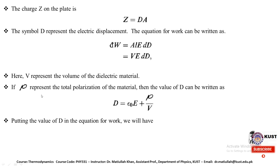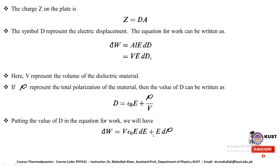We represent the polarization by rho. The relationship between the polarization and the electric displacement is given by capital D equal to epsilon_0·E plus rho divided by V, where D is the electric displacement, rho is the total polarization, V is the volume, epsilon_0 is the permittivity of vacuum, and E is the electric field. Substituting this value of D into the work equation and simplifying, DW becomes equal to V·epsilon_0·E·dE plus E·d·rho.